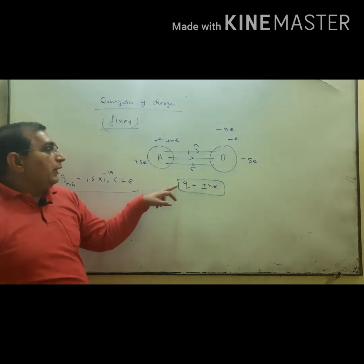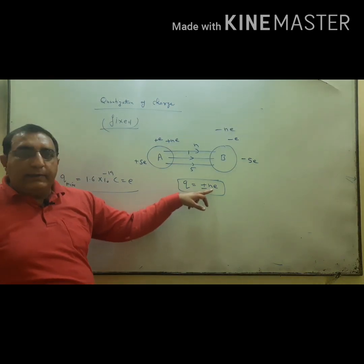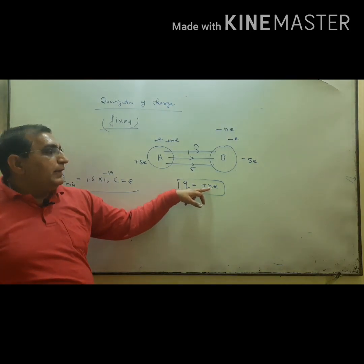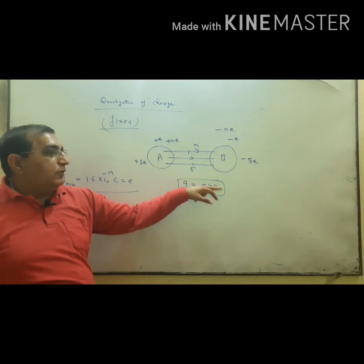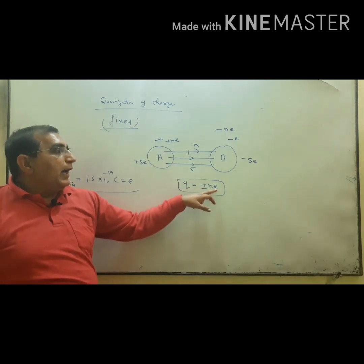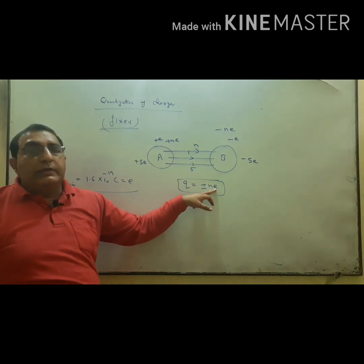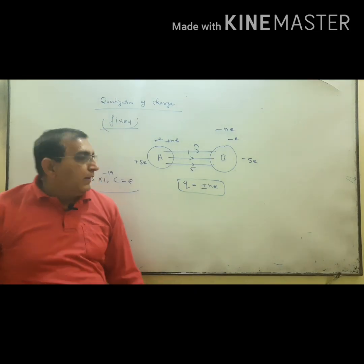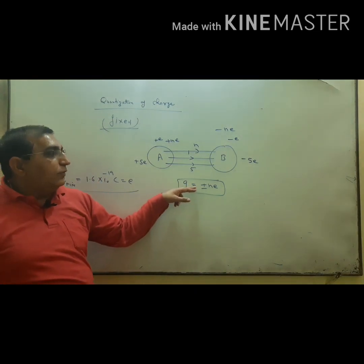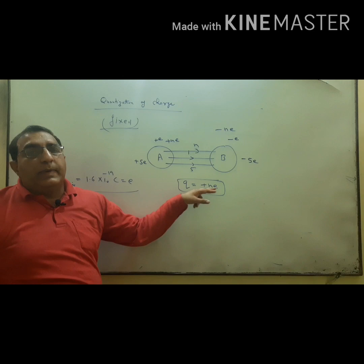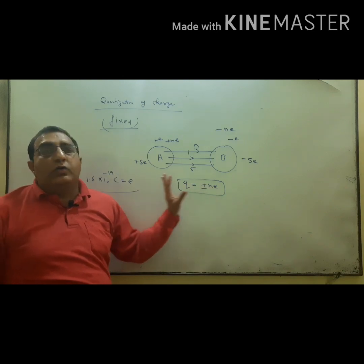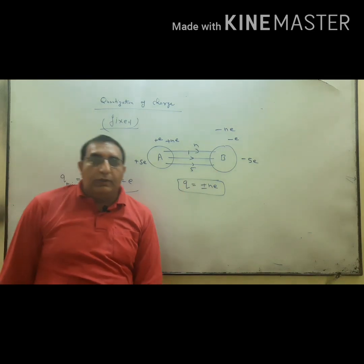The charge on a body is fixed and is always an integral multiple of the smallest unit, called the electronic charge. So charge Q = ±Ne. This is called quantization of charge.